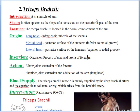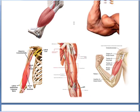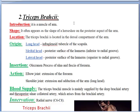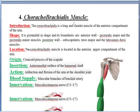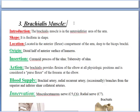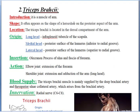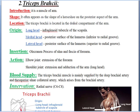Hello dear friends, welcome back. We are discussing the muscles of the arm region — the muscles of arm or brachium. In the previous lecture we discussed biceps, brachialis, and coracobrachialis. Now the third muscle: the arm is divided into an anterior compartment and a posterior compartment. The anterior compartment has three muscles, and the posterior compartment has only one — the triceps.